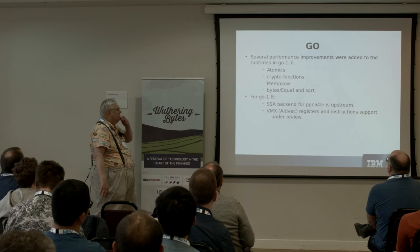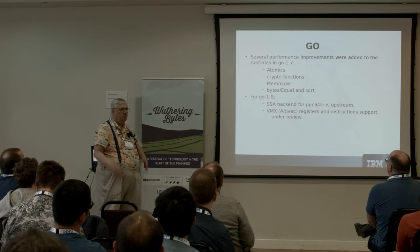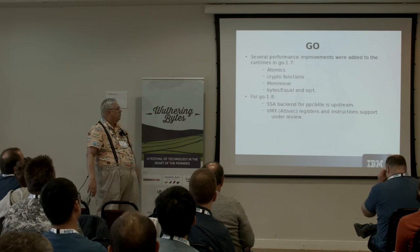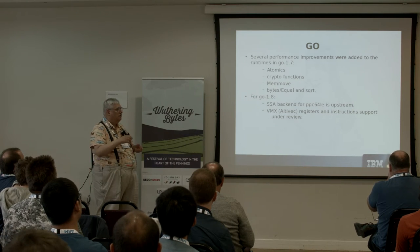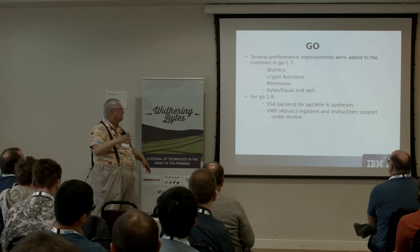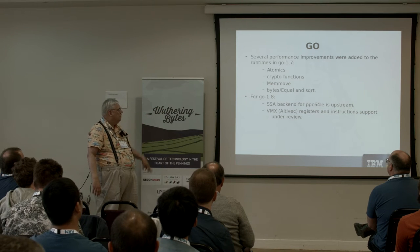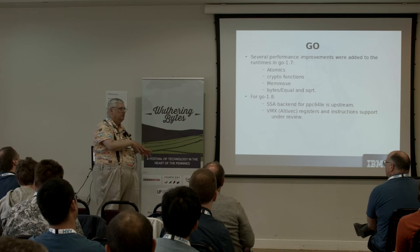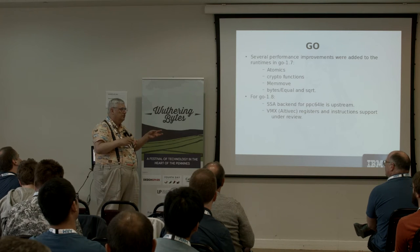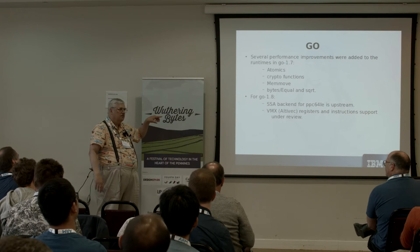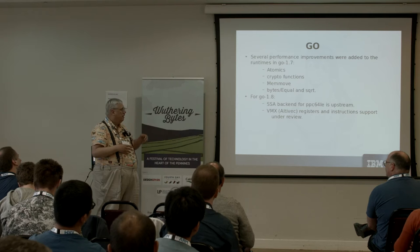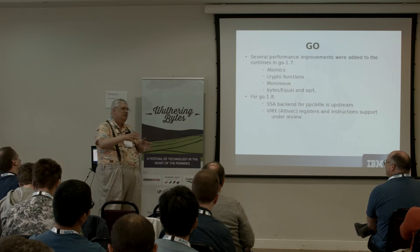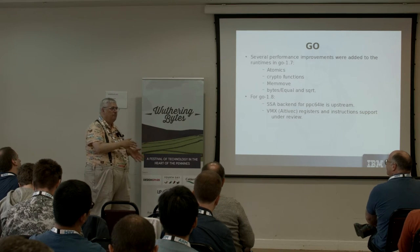Go is now becoming its own language, fed mostly by Docker but also presumably by Google. In Go 1.7 using GCC Go, they added essentially built-in functions for supporting atomics — the crypto instructions added in Power8 or ISA 2.07 — MemMove support, and Byte, SQL, and Square Root. For Go 1.8 they are moving the infrastructure to use SSA, and they finally added VMX support. VMX was the original G5 vector instruction set from Apple. Then we had VSX in Power7, with modifications in Power8 and more coming in Power9.